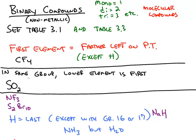If you have two elements from the same group, like sulfur and oxygen, the lower element is the one that's written first.